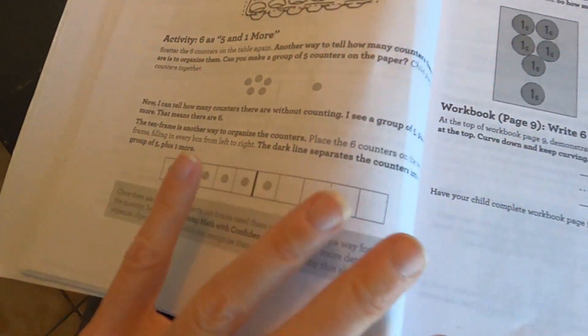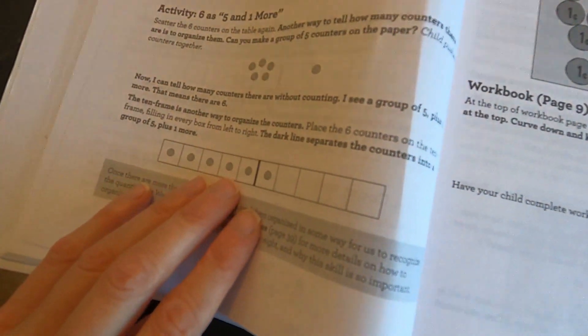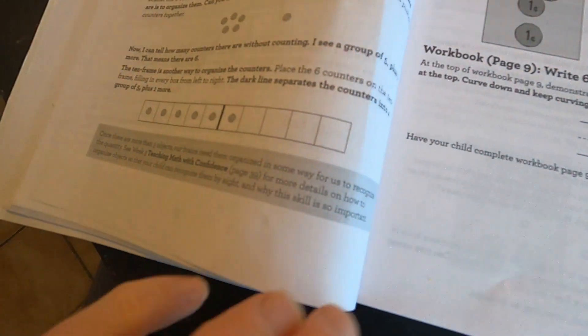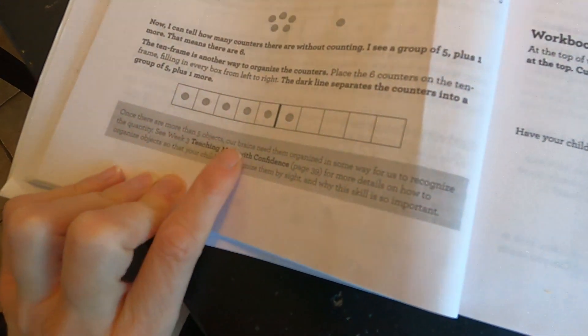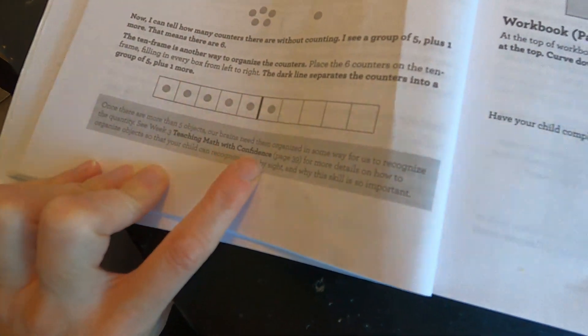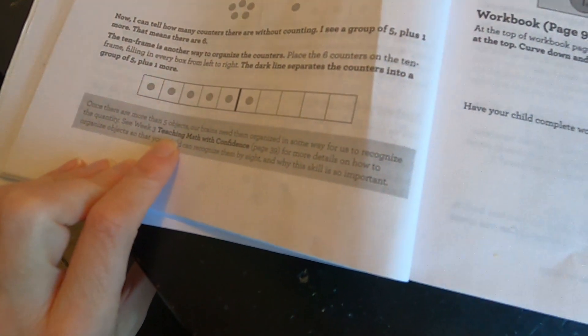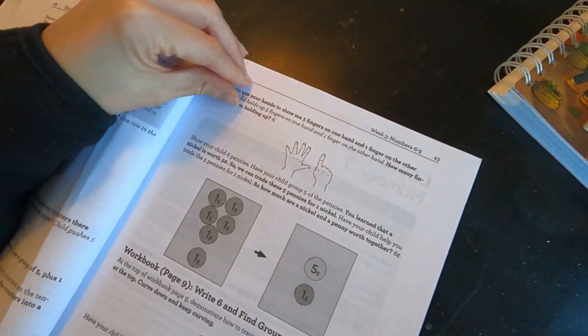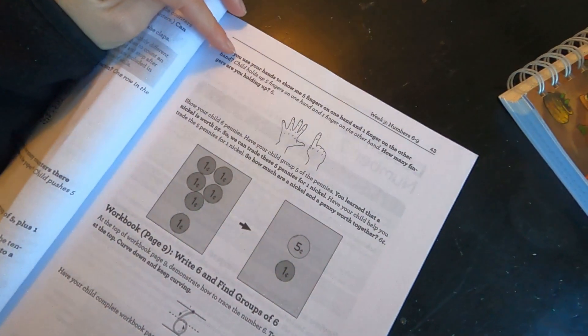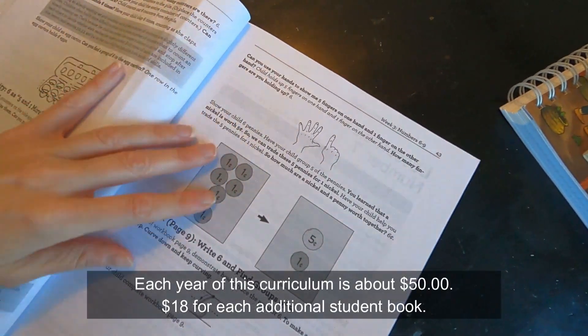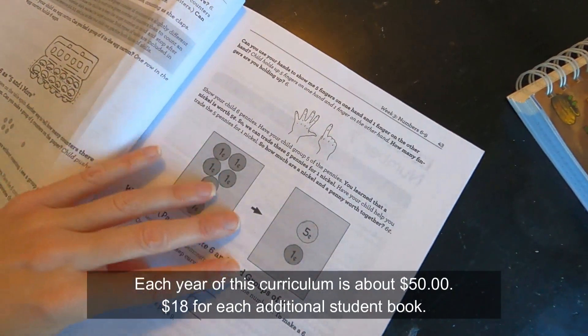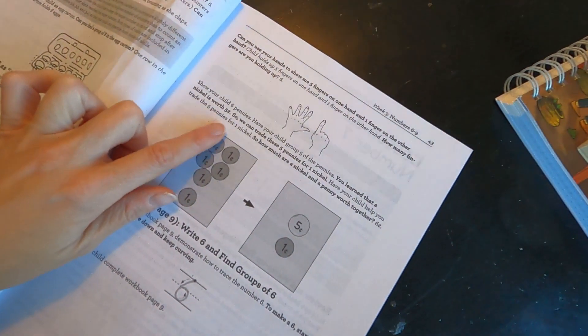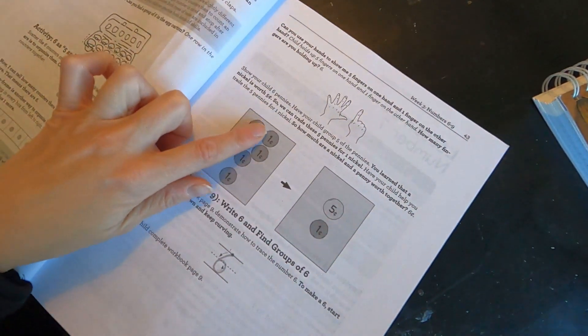Okay, now a ten frame is another way to organize counters. Place six counters on the ten frame, filling every box from right to left. The dark line separates the counters of a group of five plus one more. Once there... now this is another gray box, right? Once there are more than five objects, our brains need them organized in some way for us to recognize the quantity. See week three for more details on how to organize them for your child. All right, can your hand show me five fingers on one hand and one finger on the other? How many are you holding up? Now we're going back to... because we also learn money. Show your child six pennies. Have your child group five of the pennies. You learn that a nickel is five cents, so we can trade five of these pennies for a nickel.